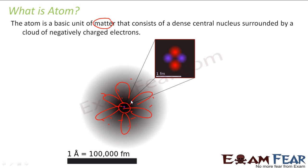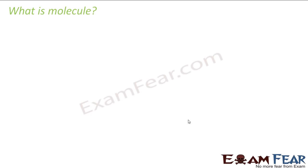Atom is the basic unit of matter. It consists of a dense nucleus which has neutrons and protons, and then a very large cloud of electrons where you have a good probability of finding electrons. But most of the matter which we see is not in the form of individual atoms — they exist in the form of molecules. So let's understand what a molecule is.